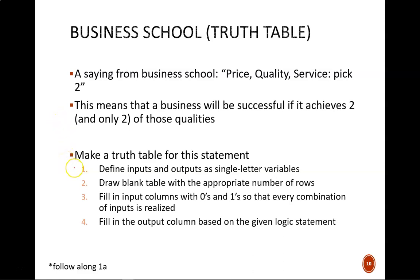Now, to make a truth table, go through these four steps. Define your input and output variables as single letters. Draw a blank table with the appropriate number of rows. Fill in the input columns with zeros and ones as a straight binary count. And finally, consider the logic to fill in the output column. Pause the video now so you can complete these steps.